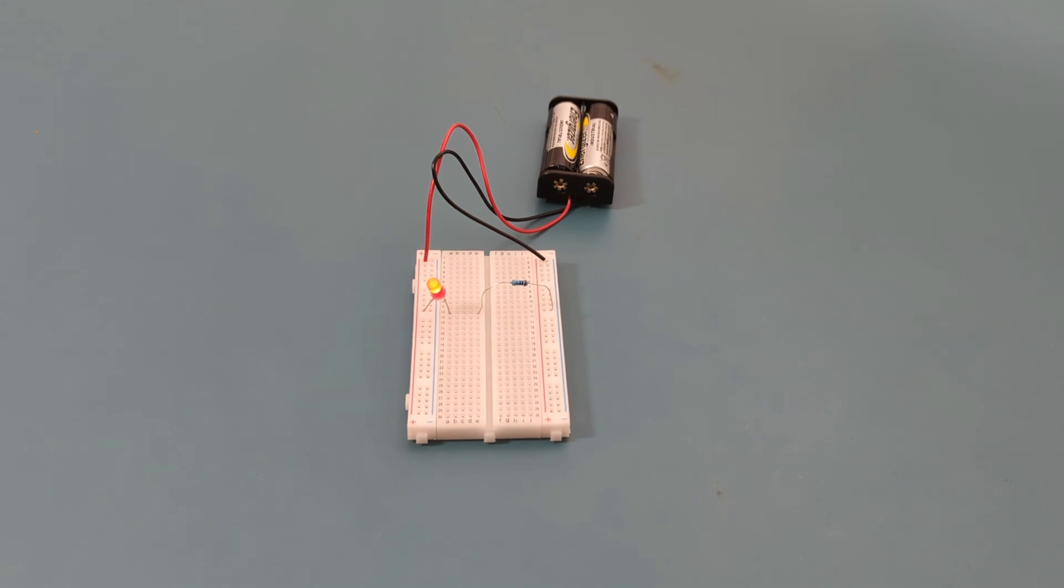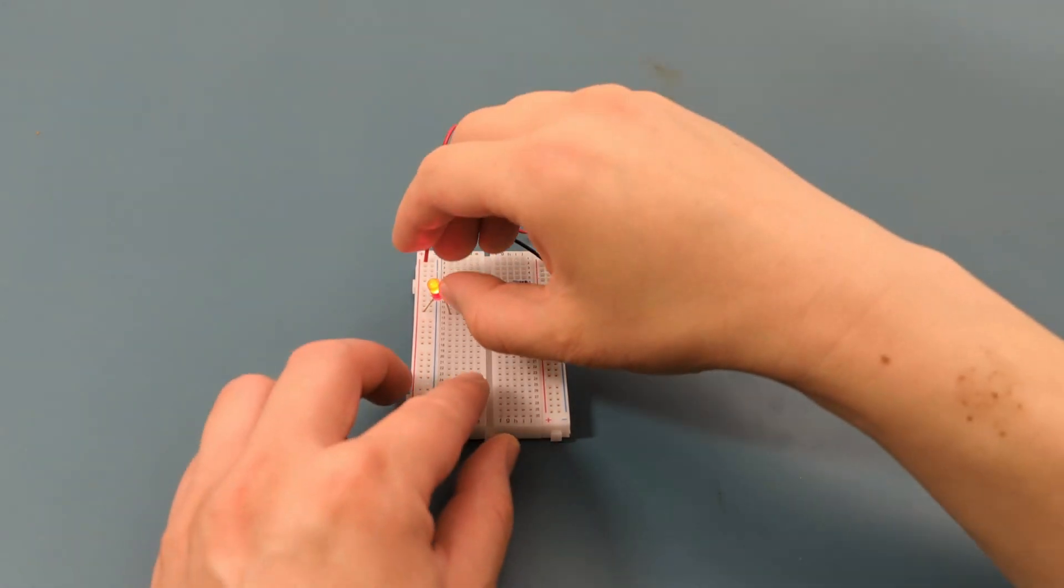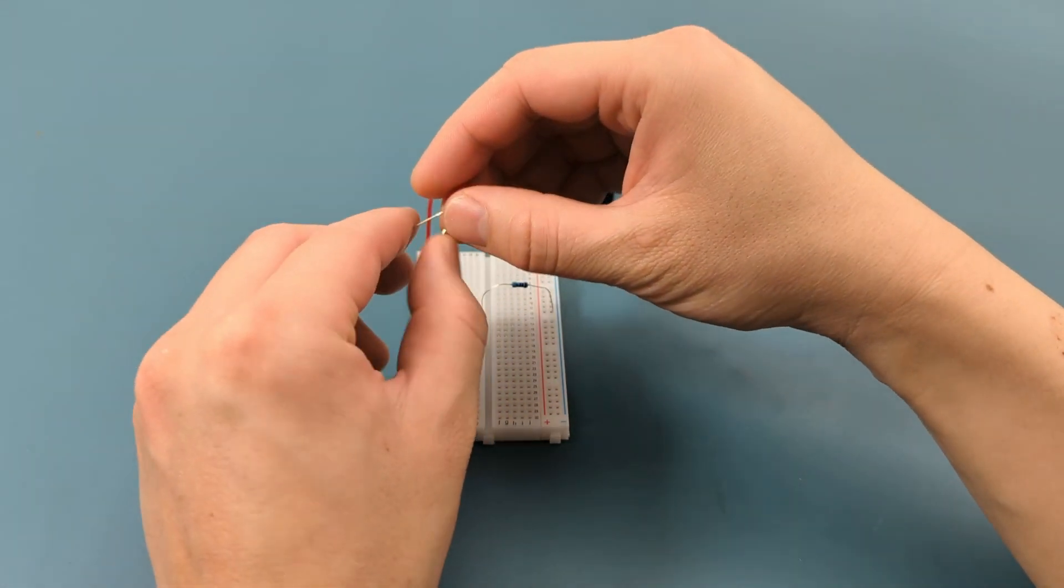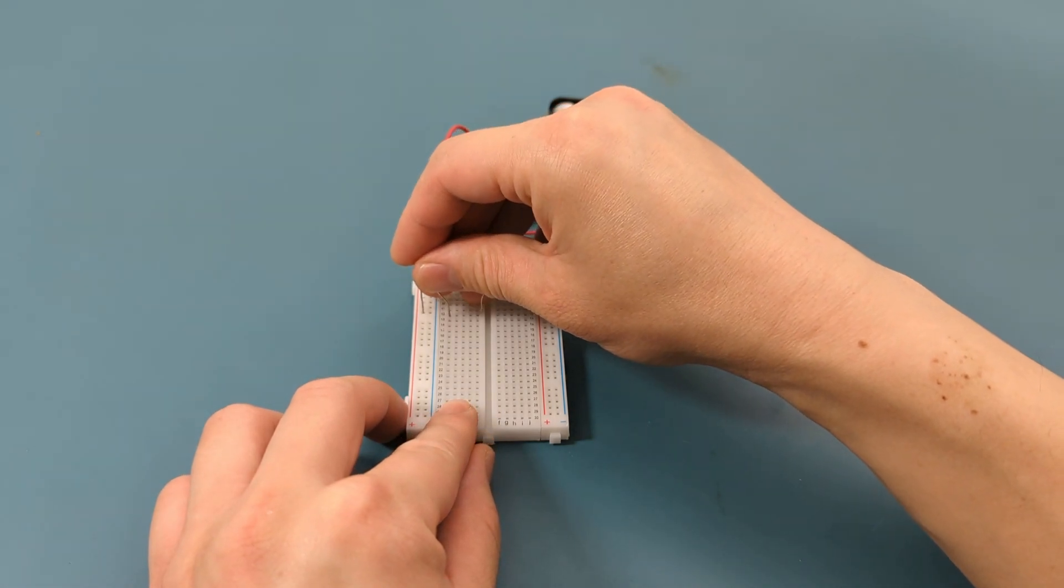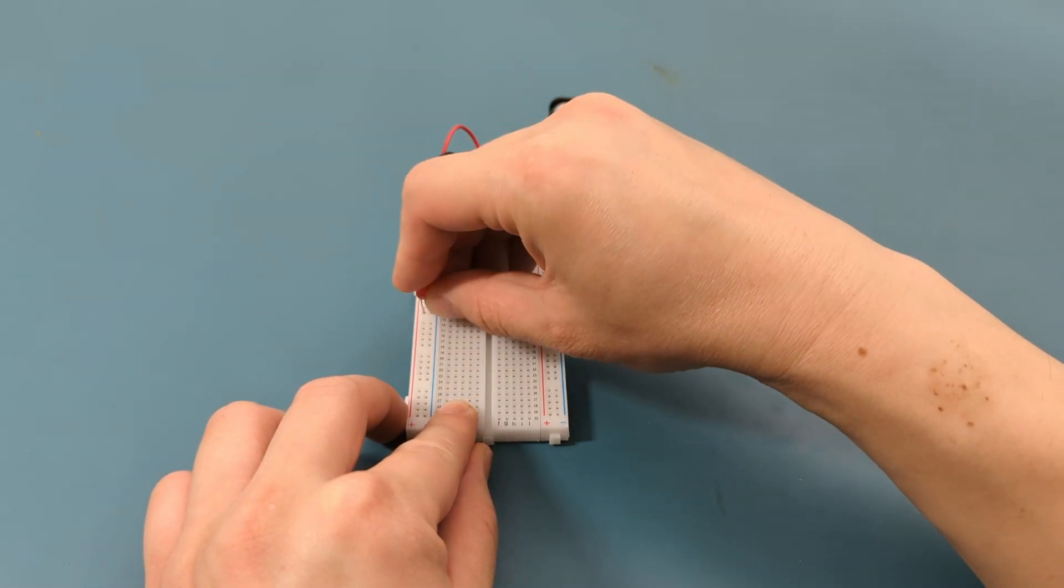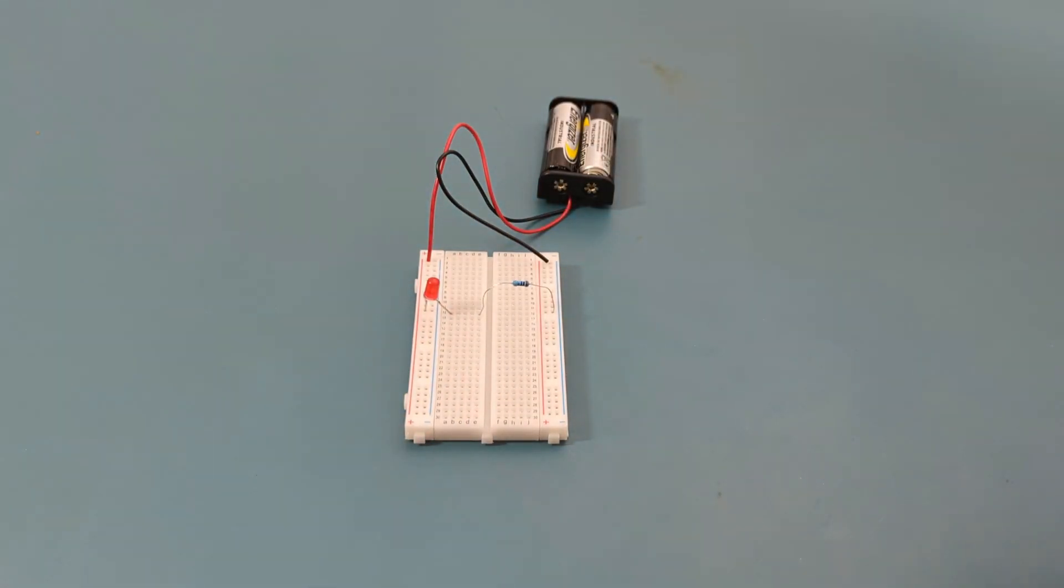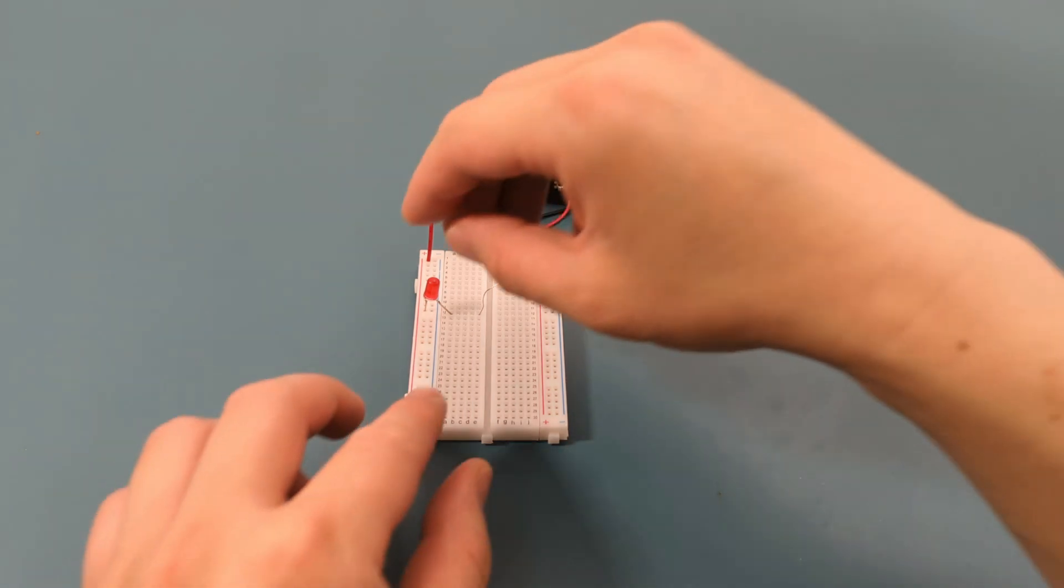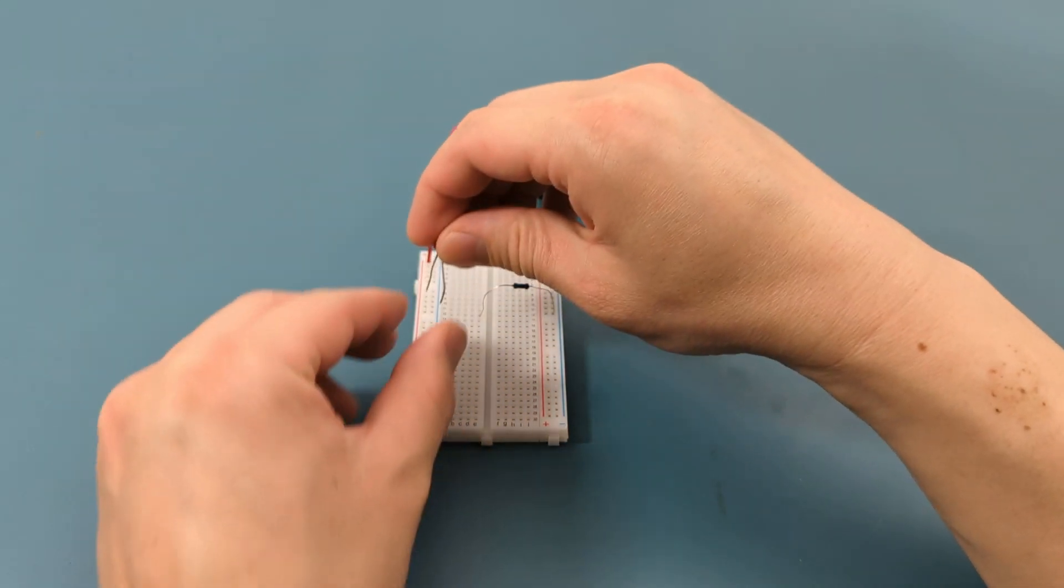Some components, like LEDs, have polarity, meaning they need to be connected in a specific direction. Let's reverse the LED and see what happens. As you can see, the LED doesn't light up. The longer leg of an LED is the positive side, so it must connect to the positive rail.